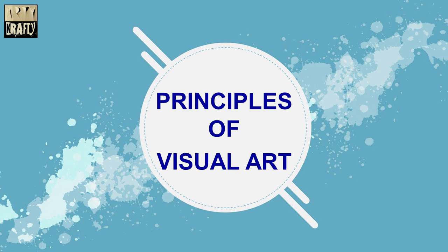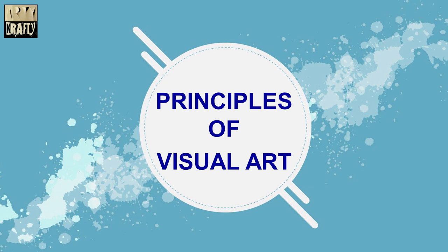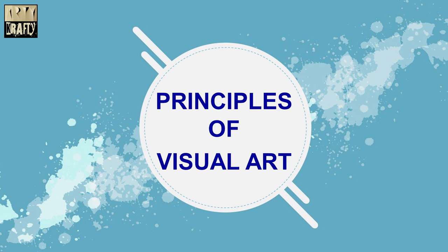The elements and principles of visual art are the foundation of the language we use to talk about art. As we know from my previous video, the elements of art are the visual tools that the artist uses to create a composition, that is a painting or a sculpture. These are line, shape, color, value, form, texture and space.